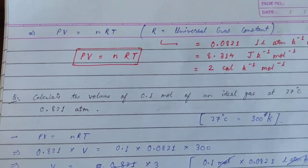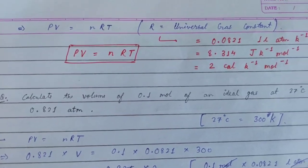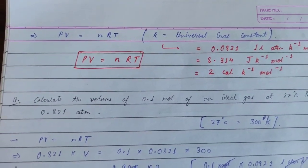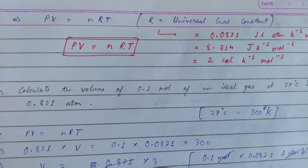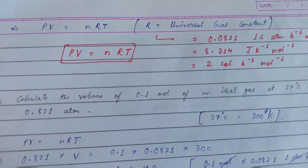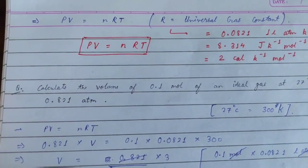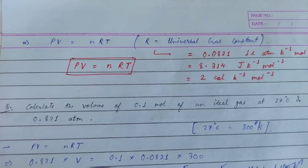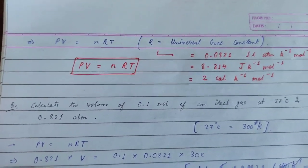Now let us see some questions. The first question: calculate the volume of 0.1 mole of an ideal gas at 27°C and 0.821 atm. ATM is basically atmospheric pressure. We use PV = nRT, and since temperature is given in degree Celsius, we first have to convert it to Kelvin.